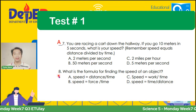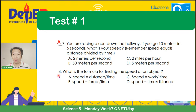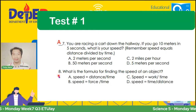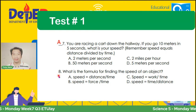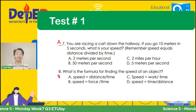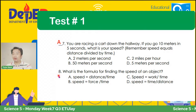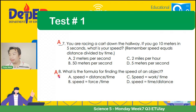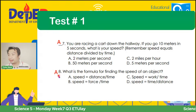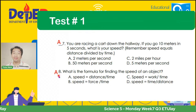Moving on to item number 8: what is the formula for finding the speed of an object? A — speed equals distance over time; B — speed equals force over time; C — speed equals work over time; D — speed equals time over distance. If your answer is letter A, kagaya ng sagot ni Jean Nanaw, Stephanie Villaluz, Eunice Paragas, at Becca Ponpon, tama ang inyong naging tugon. Very good. The answer is letter A.